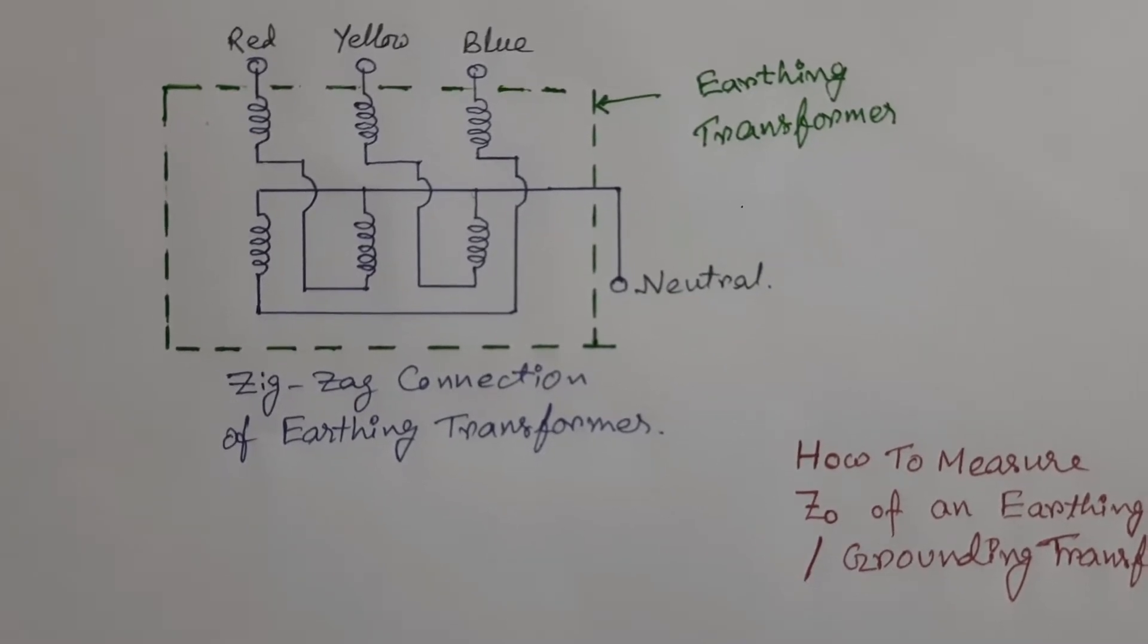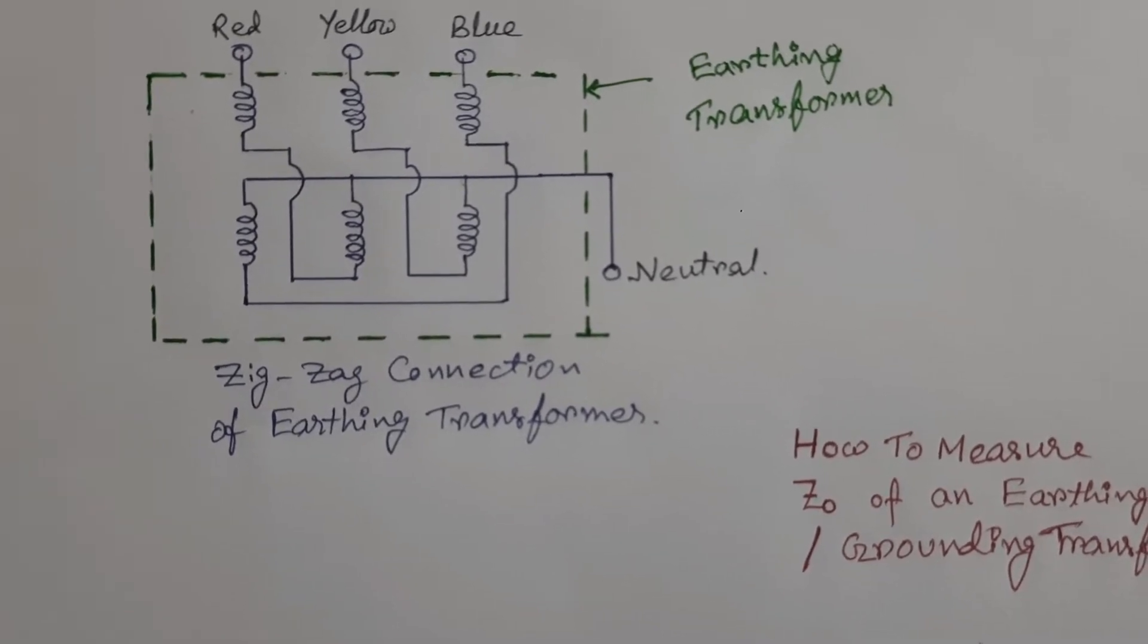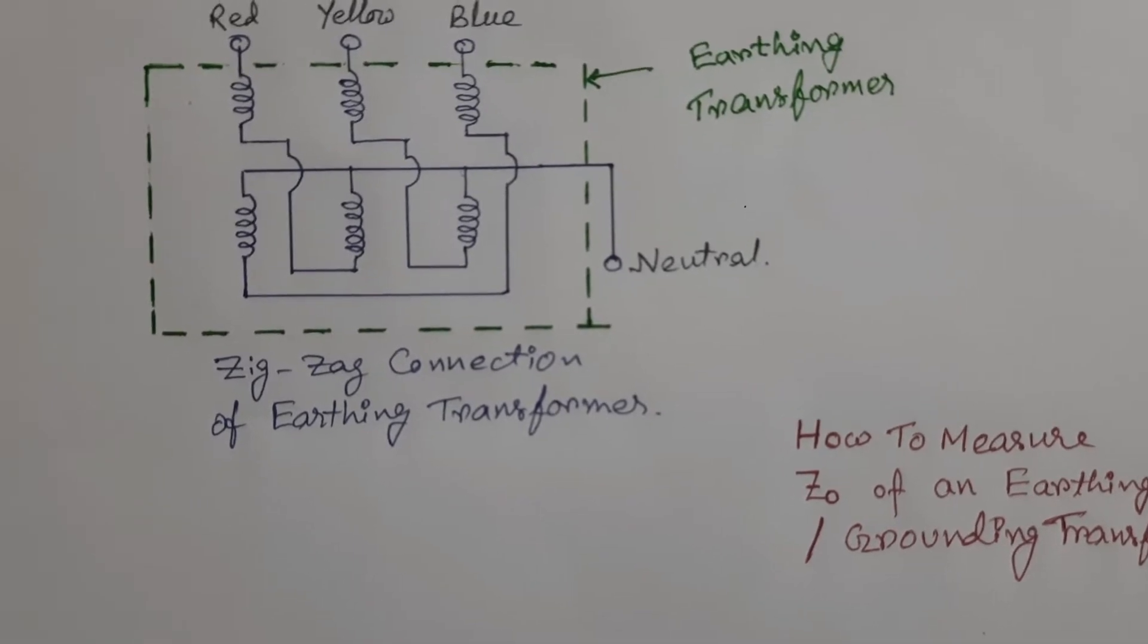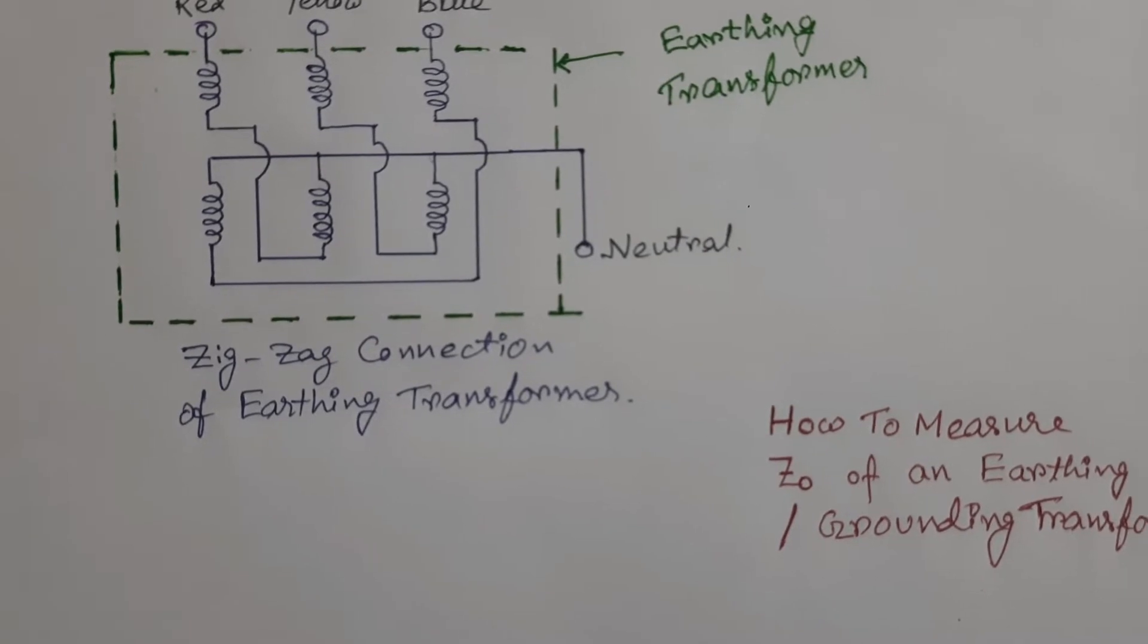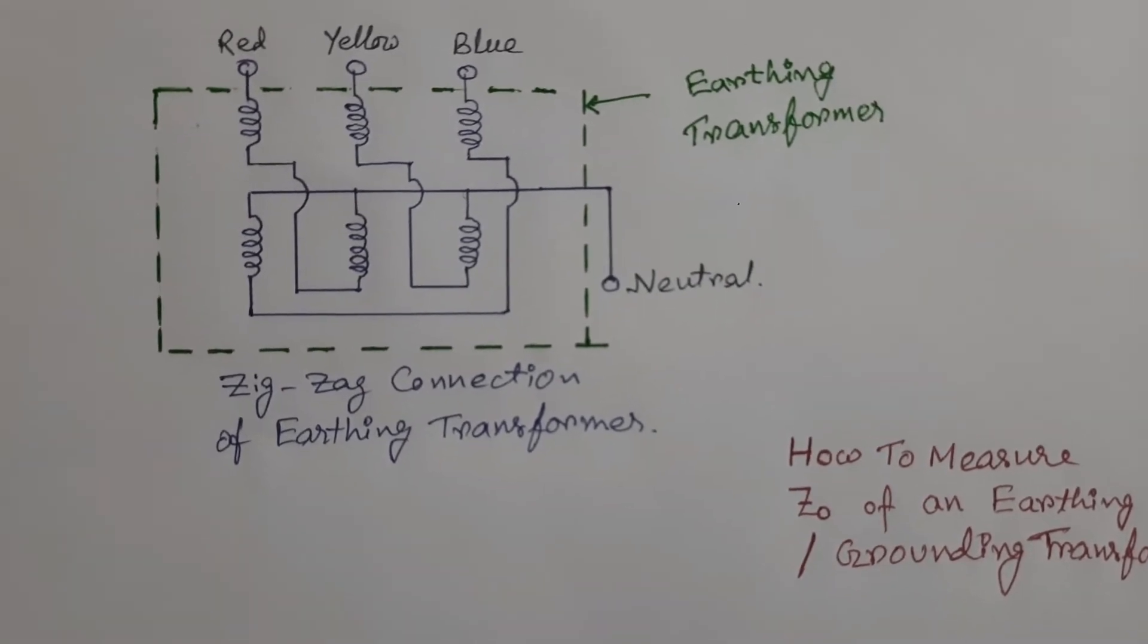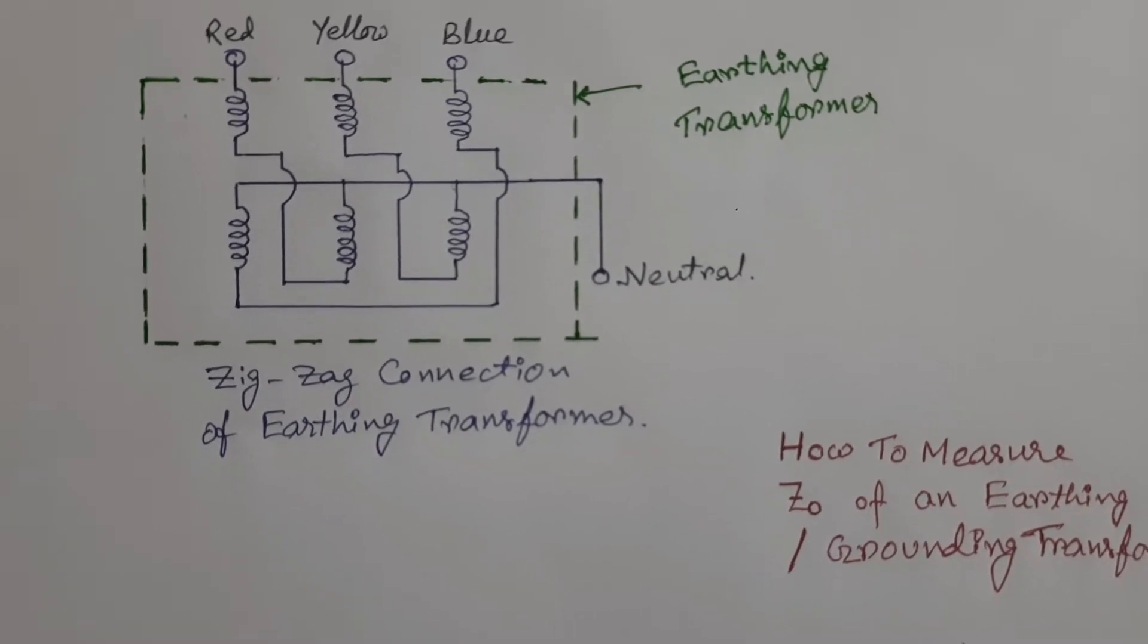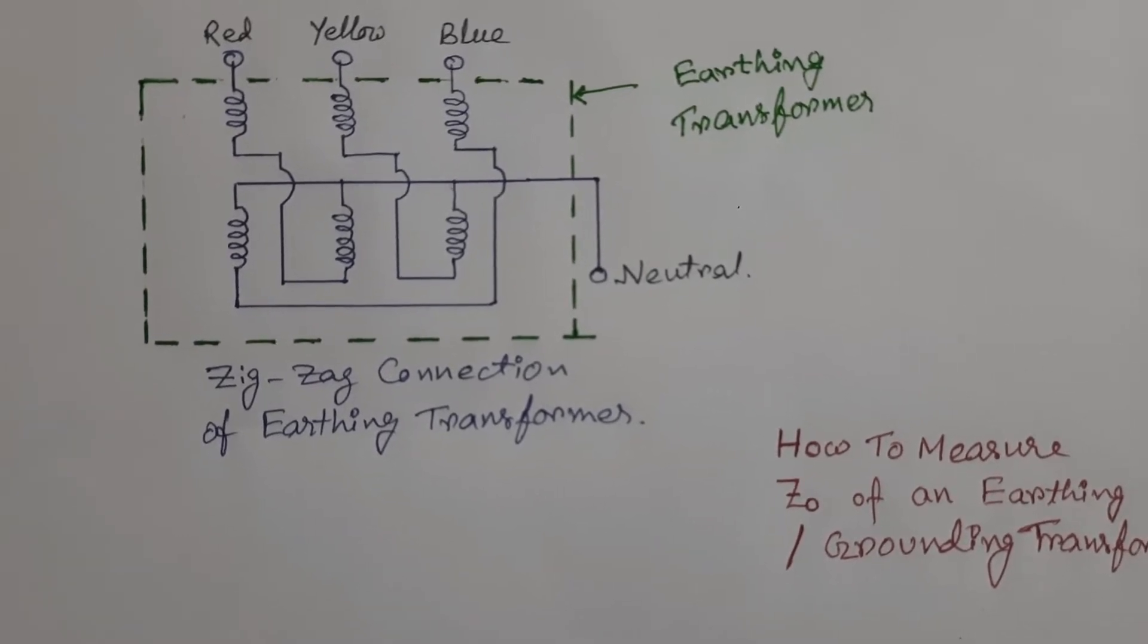But how to apply zero sequence voltage? Zero sequence voltage means there should not be any phase difference between different phases. In the case of normal three-phase voltage, there is 120 degree phase angle between any two phases. But in the case of zero sequence voltage, there is no phase difference between any two phases.